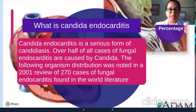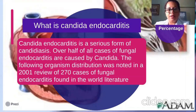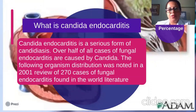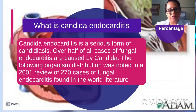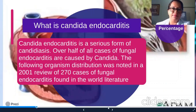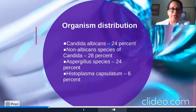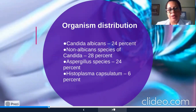What is Candida endocarditis? Candida endocarditis is a serious condition where the majority of cases of fungal endocarditis are caused by Candida. A review of world literature found 270 cases of fungal endocarditis. Candida albicans accounts for 24 percent, while non-albicans Candida species account for 26 percent.